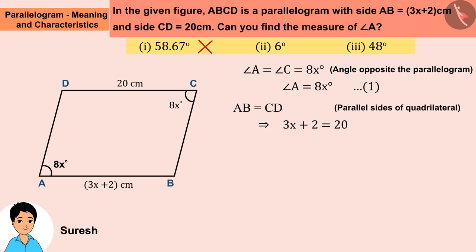Suresh solved the question in this way. Solving the equation, Suresh gets the value of X as 6, and Suresh takes it as the answer. He forgot that in this question the value of X is not asked, but the value of angle A is asked. In this way, Suresh gets the value of angle A as 6 degrees, which is the wrong answer.